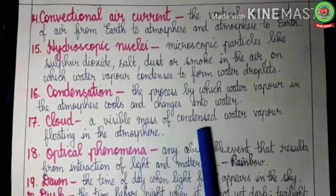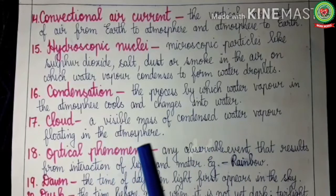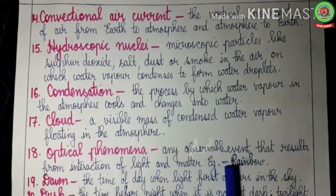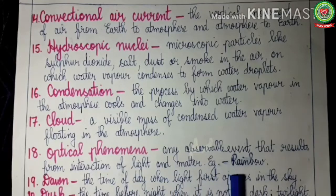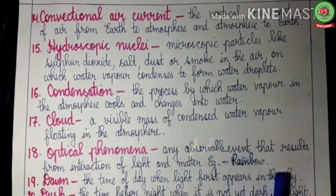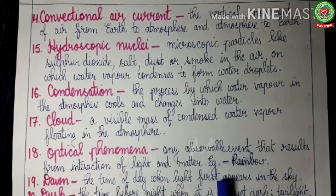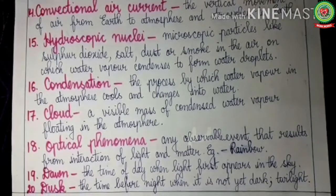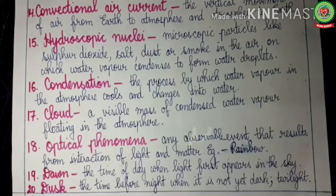Cloud: the visible mass of condensed water vapor floating in the atmosphere. Optical phenomena: any observable event that results from the interaction of light and matter — for example, a rainbow, where we can see the seven colors of light. Dawn: the time of day when light first appears in the sky, meaning the time before sunrise. Dusk: the time before night when it is not yet dark, also called twilight.